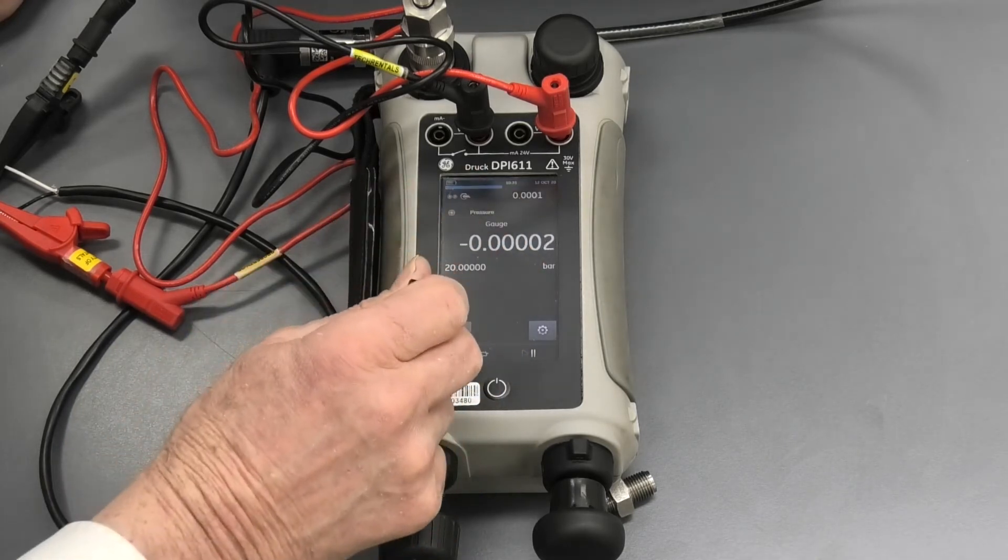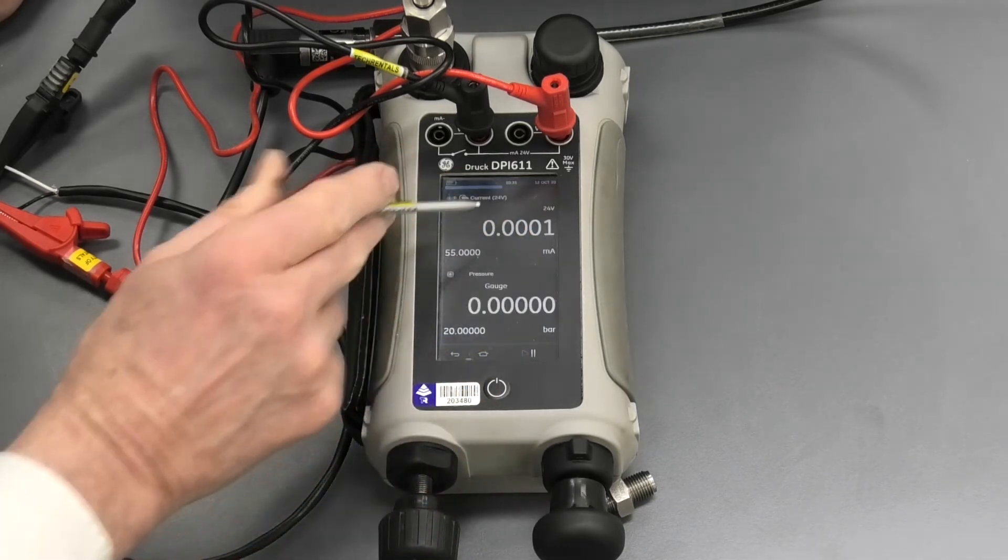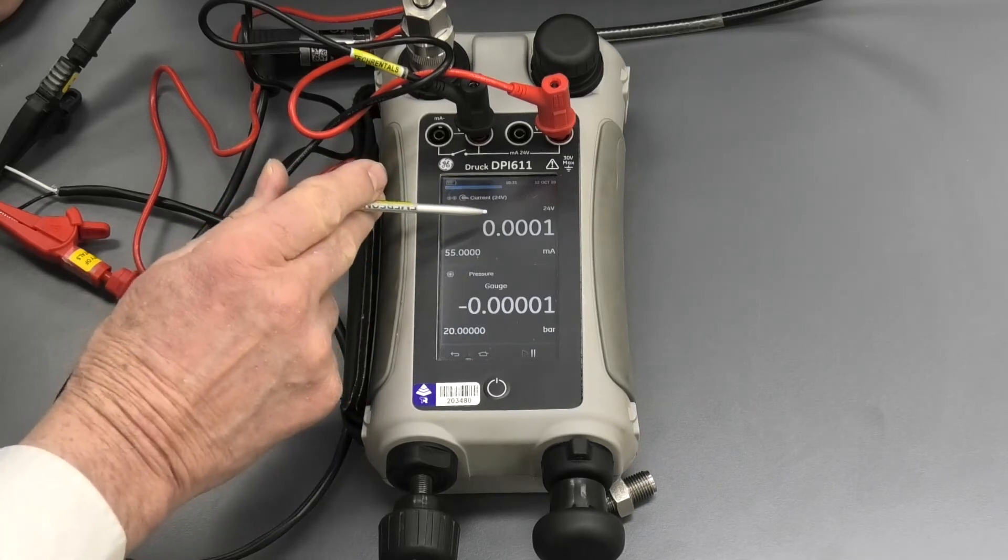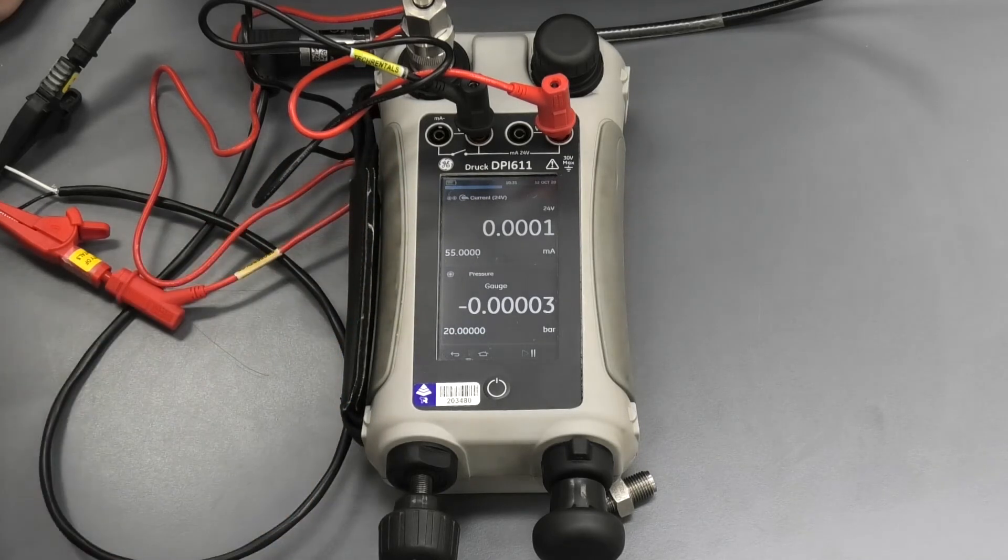Now we come back and back again. Now we've got the display up here. Now when we hit that button, this is the 4 to 20 milliamp value at the top and the pressure at the bottom.